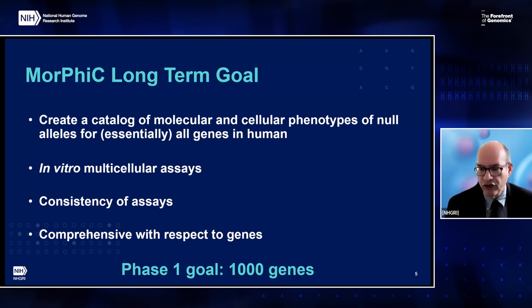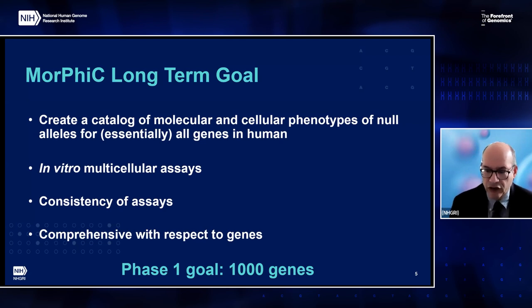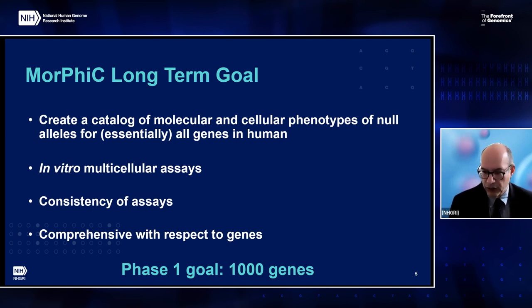This concept envisages that assays will be done in cells and be as informative as possible regarding cellular molecular phenotypes. We anticipate this means multicellular systems such as organoids. The concept also anticipates that, at least for phase one, the focus will be on protein-coding genes. Even with these constraints, this is a challenging problem. We think the basic ingredients are available, but don't know which are best in terms of information and scalability, including capacity for lower costs per gene. In phase one, with a target of one thousand genes, we think we can learn this.